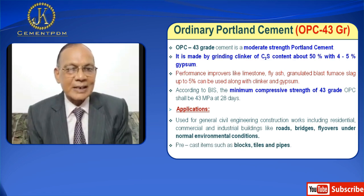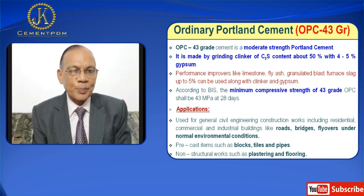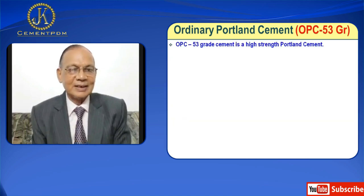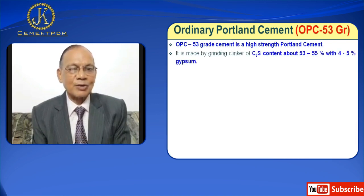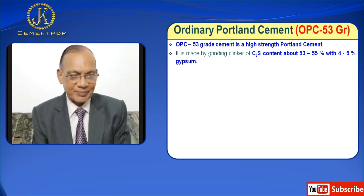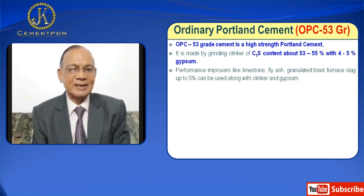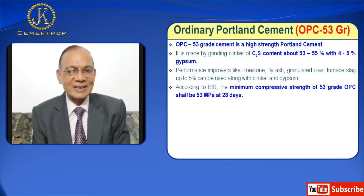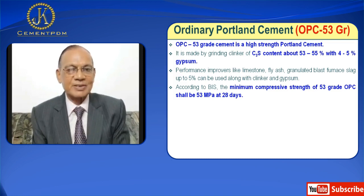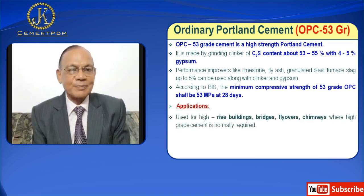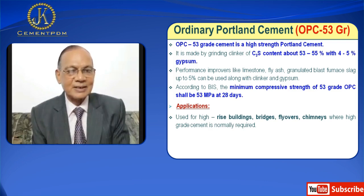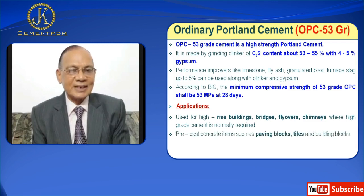The last grade is Ordinary Portland Cement 53 grade, OPC 53. OPC 53 grade cement is a high strength Portland cement. It is made by grinding clinker with C3S content of about 53–55% with 4–5% gypsum. Performance improvers like limestone, fly ash, and granulated blast furnace slag up to 5% can be used. According to BIS, the minimum compressive strength of 53 grade OPC shall be 53 MPa at 28 days. Applications include high-rise buildings, bridges, flyovers, and chimneys where high grade concrete is required, precast items like paving blocks and tiles, pre-stressed concrete components, runways, concrete roads, and bridges.